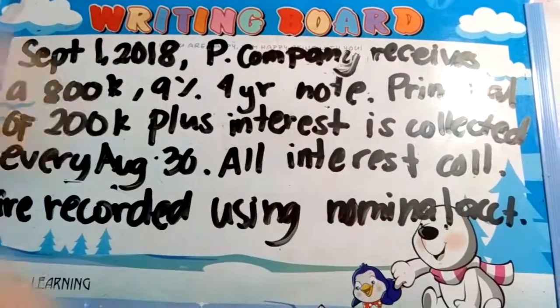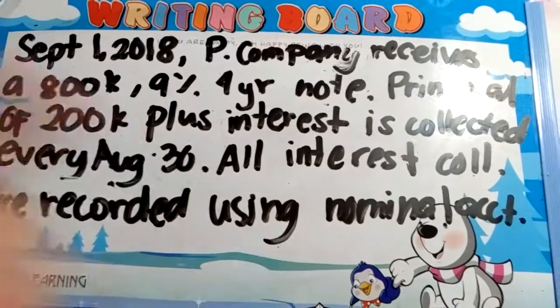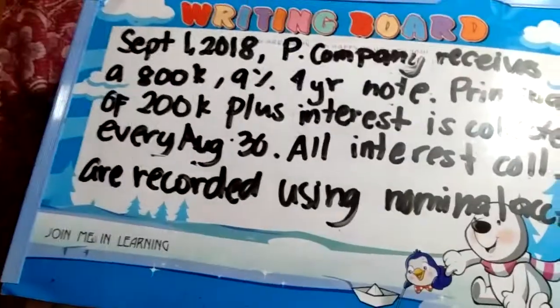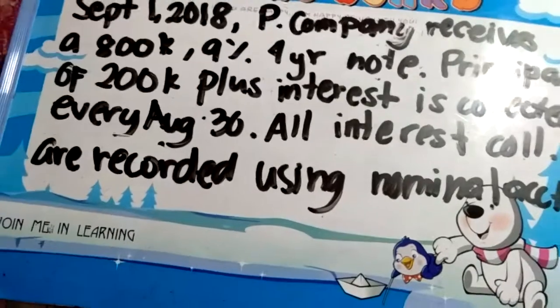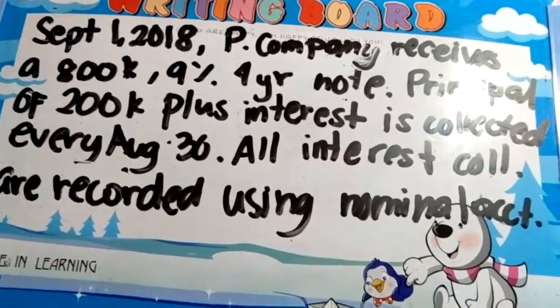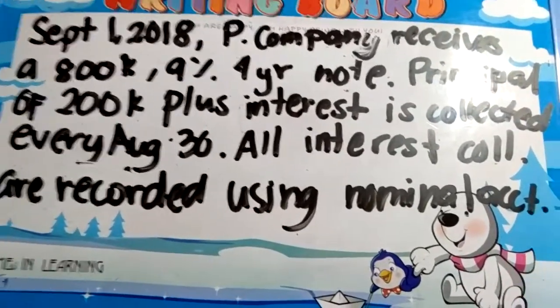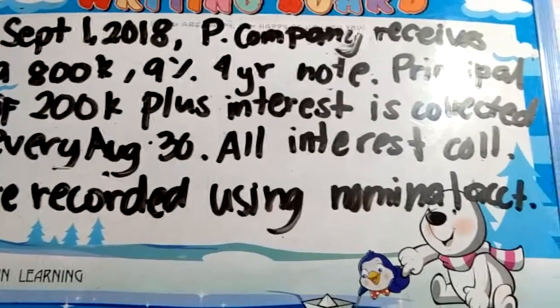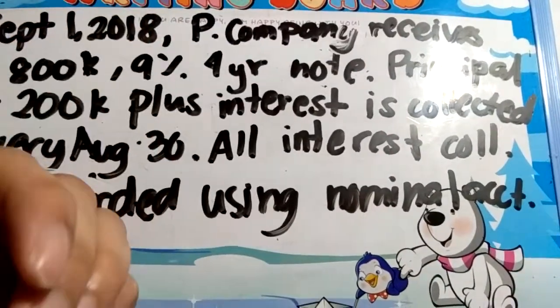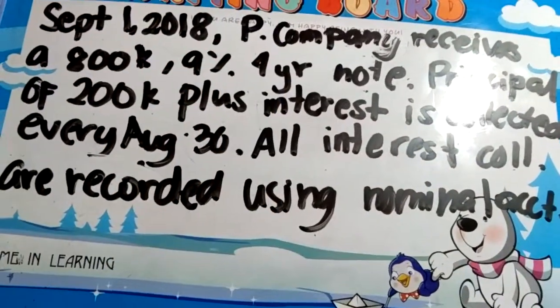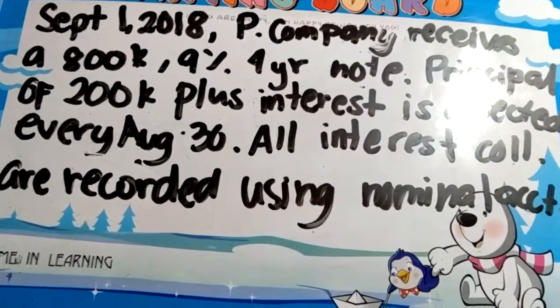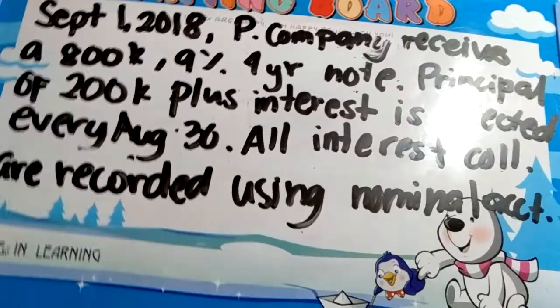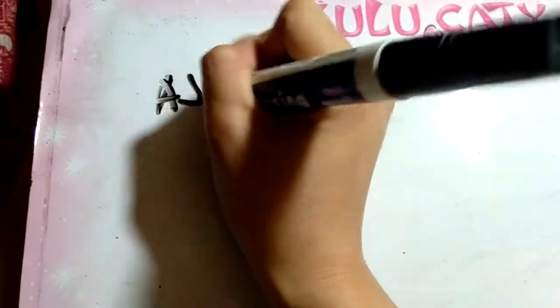So may I ask — did you lend money or did you borrow? Of course you lent the money, because you received the note, so they are the ones who owe you. So given this, we need to make an adjusting entry at the end of the year. What is your adjusting entry?